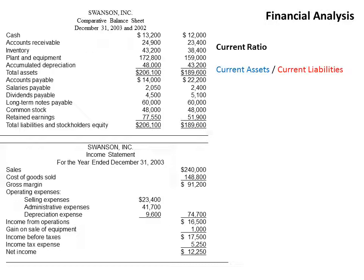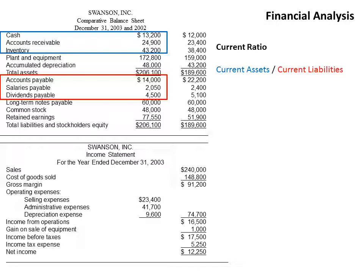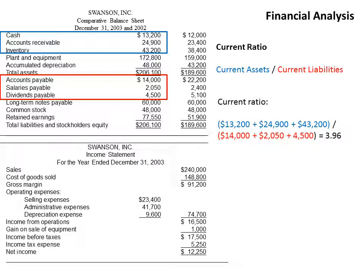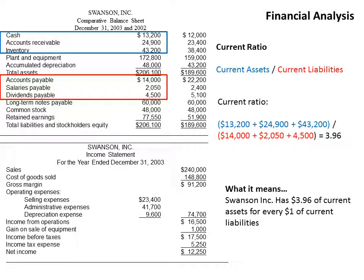Now we'll take a look at the current ratio, which is very similar to the quick ratio. The difference is that the current ratio incorporates inventory, where the quick ratio doesn't, so it gives a slightly higher number. It records our ability to pay short-term obligations. Our current ratio is cash plus accounts receivable plus inventory, divided by accounts payable, salaries payable, and dividends payable. We get 3.96 — they have $3.96 of current assets for every $1 of current liabilities, because inventory is included. If inventory is a low-priced item like a candy bar, that's fine, but if it's a car that doesn't sell quickly, that's something to consider.